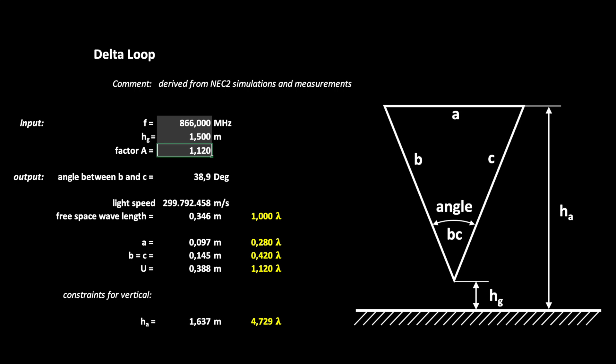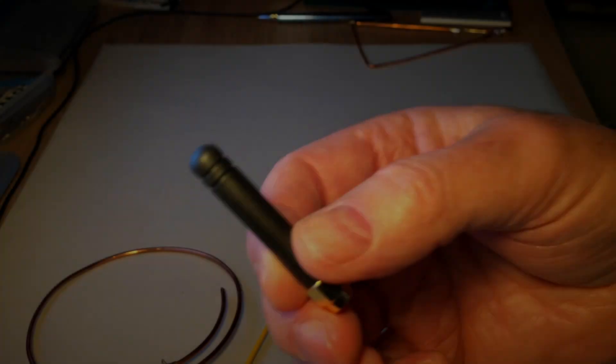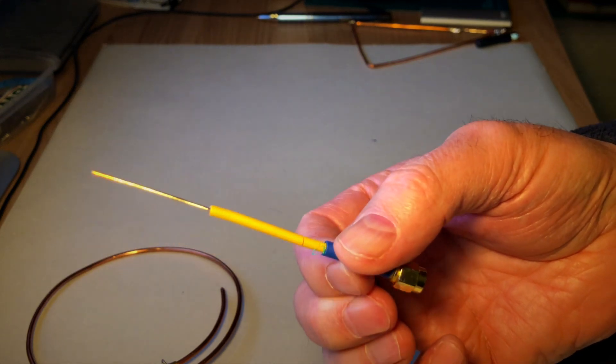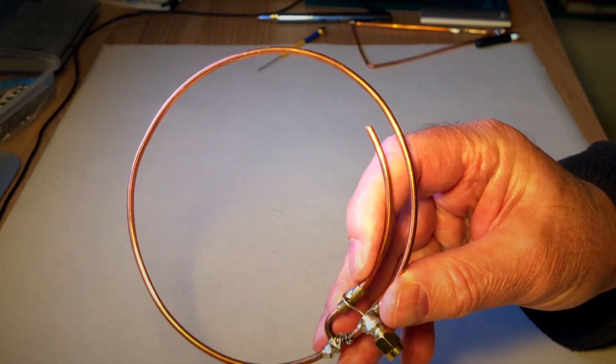We built the antenna for 866 MHz to compare it with a commercial rubber coil antenna, a homemade quarter wave monopole and a homemade round loop.